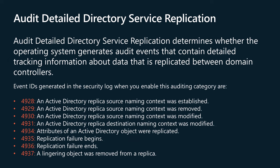The Audit Detailed Directory Service Replication policy determines whether the operating system generates audit events that contain detailed tracking information about data that is replicated between domain controllers. This audit subcategory can be useful when you need to diagnose ADDS replication issues.